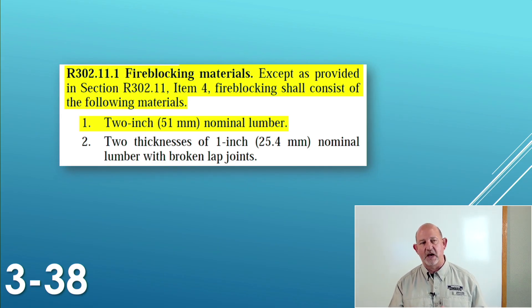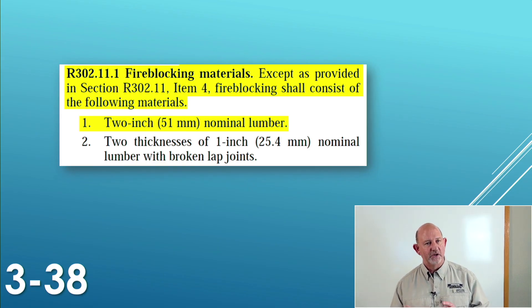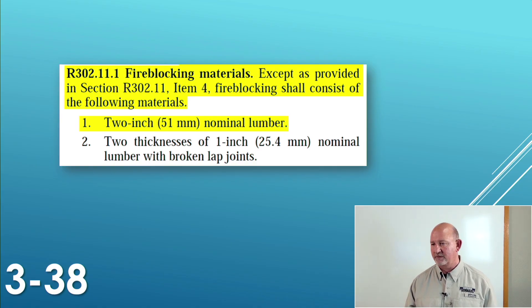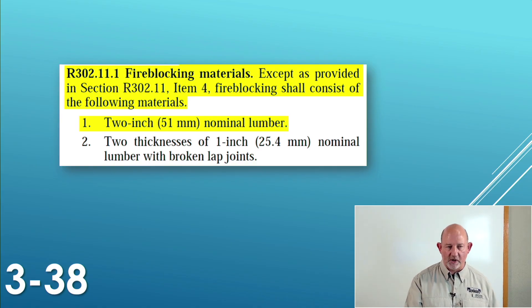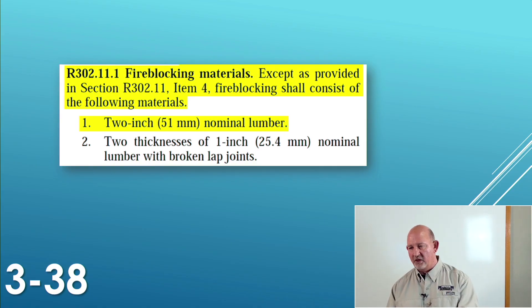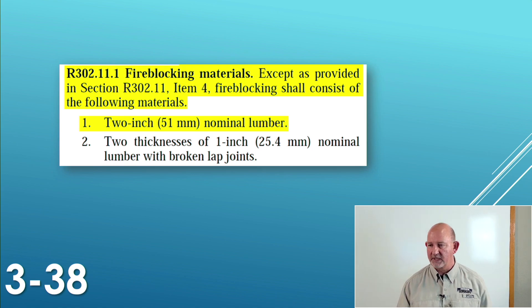The way you understand this: take the last number, make it go away. If I take this .1 away, that takes me back to 302.11. So this fire blocking material is in regard to 302.11. Do it again — if you take the .11 fire blocking away, that takes you back to 302, fire-resistant construction.